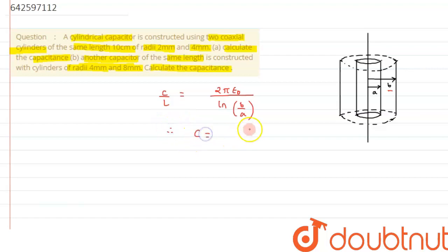Therefore from here we can say the value of capacitance can be written as 2π epsilon 0 L divided by ln of B by A. So this is a quite important result which we have to remember.